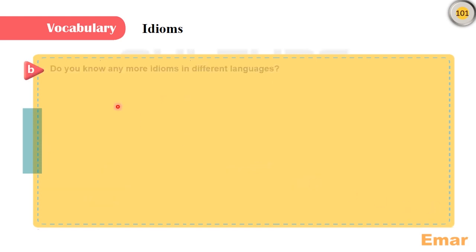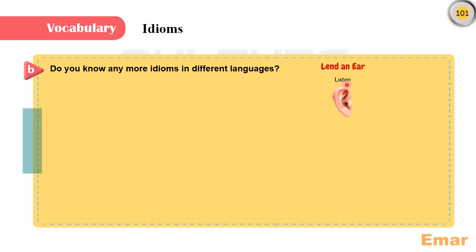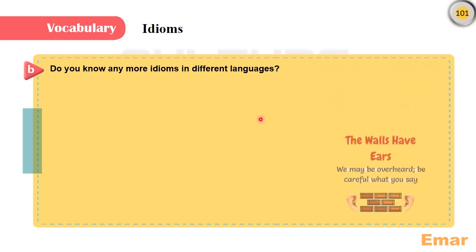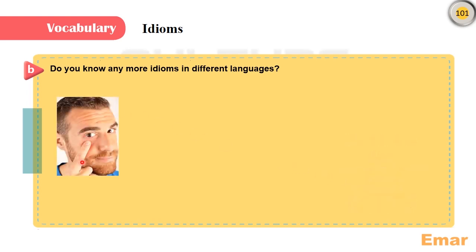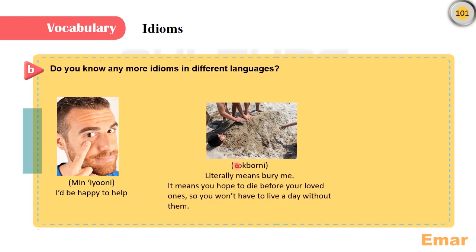Exercise B: do you know any more idioms in different languages? Does this picture ring a bell? Lend an ear — which means listen. I'm all ears — I'm all attentive. The walls have ears — maybe we could be overheard, so be careful what you say. Let's move on to Arabic idioms: 'Minayuni' — which means I'd be happy to help. 'Tokburni' — it means you hope to die before your loved ones.